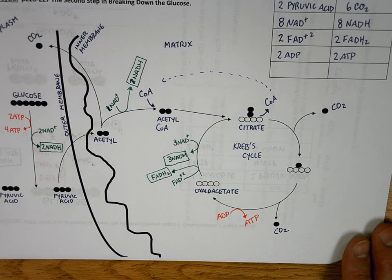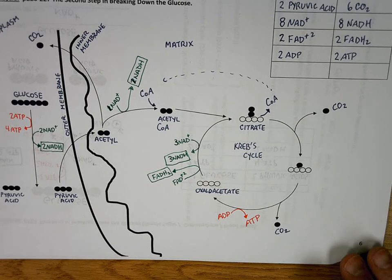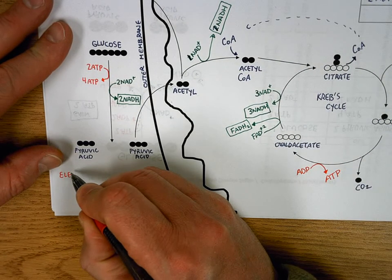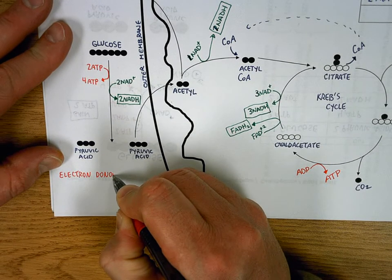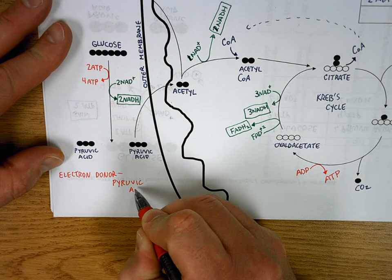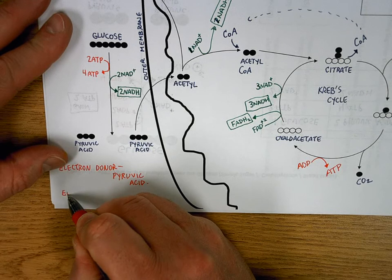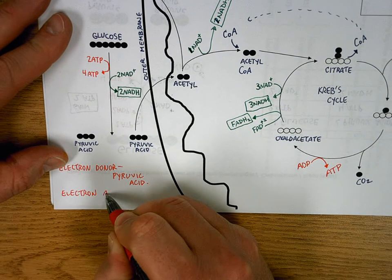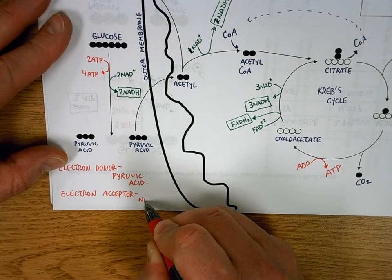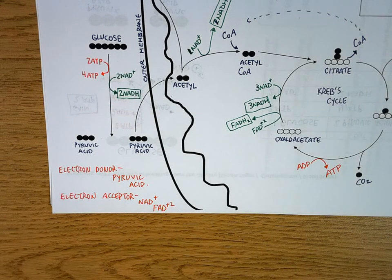Now, the last thing I like to do when I look at this is say, what was the initial electron donor? Where were the electrons at the beginning of this story? The electron donor at the beginning was pyruvic acid. That's where the electrons were when we started this story. Any electrons that were lost, where did they end up? What was the electron acceptor? That's going to be NAD and FAD. That's where the electrons went.